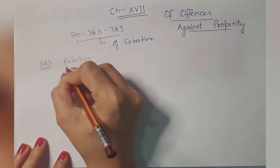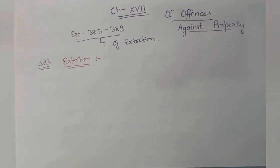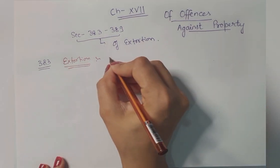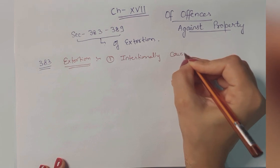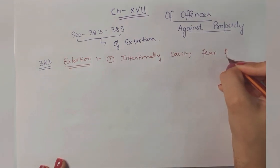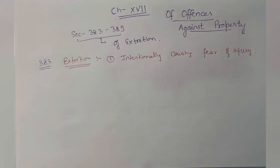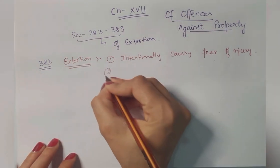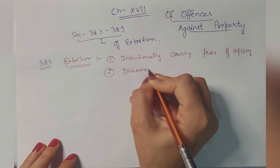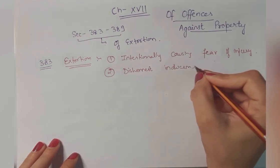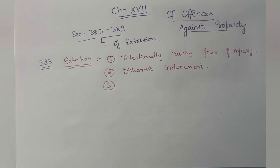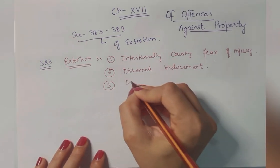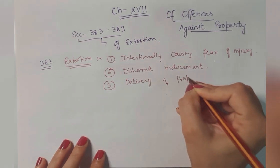Let's understand the ingredients of extortion. Firstly, there should be intentional causation of fear of injury — intentionally, with knowledge, you are causing fear of injury to another person. Secondly, there is dishonest inducement — you are inducing the other person dishonestly. The third and main ingredient is the delivery of any property by any person to the other one.